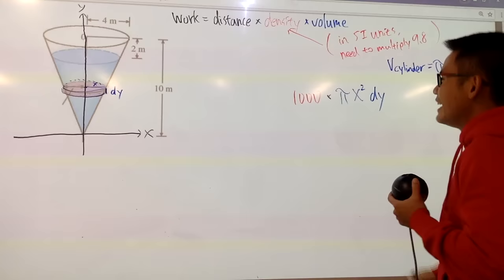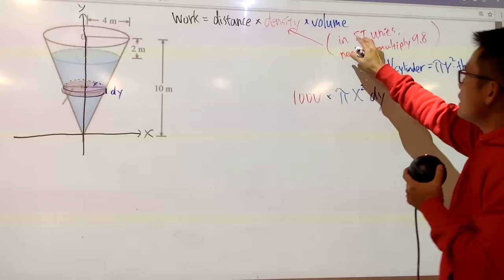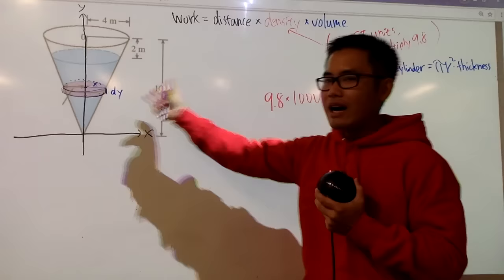Anyway, so the mass density of the water, that's water, not gasoline, not milk whatsoever, it's 1,000, for water. And once again, whenever we are in the SI unit, we have to remember to multiply by 9.8 because of the gravity. So we multiply by 9.8. So this right here will take care of the density part of whatever we have in the tank.